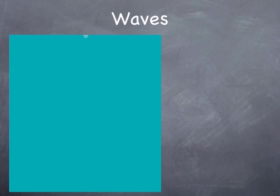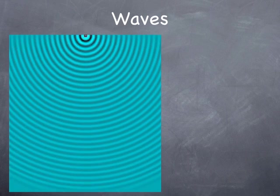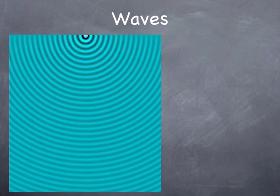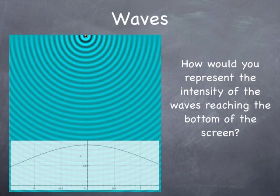Now here's a different experiment involving waves. The idea is we've got a wave source that produces some waves, and they come down and hit the bottom of the pond or whatever it is. How would you represent the intensity of waves reaching the bottom of the screen? You might come up with something like this. Notice at the center they're closest to the source, and as you move to the right and left, you get a little further from the source, so the amplitude is going to drop or the intensity is going to drop.